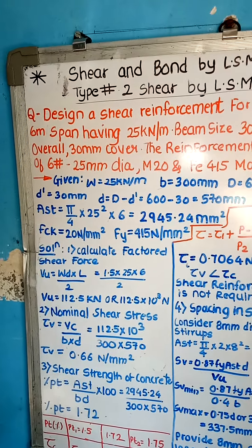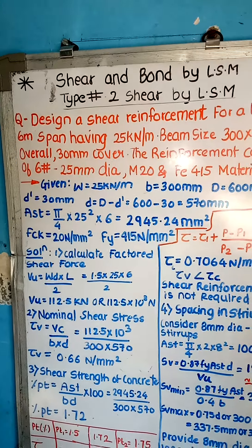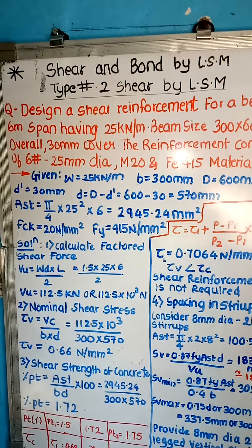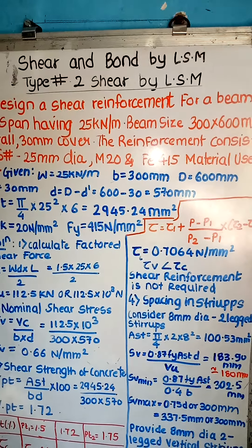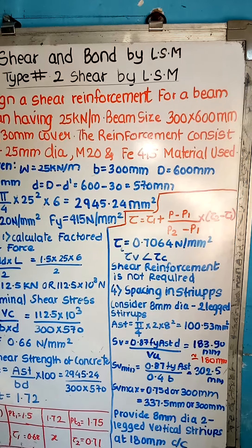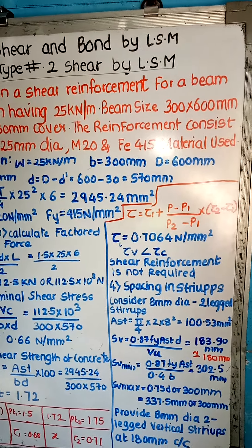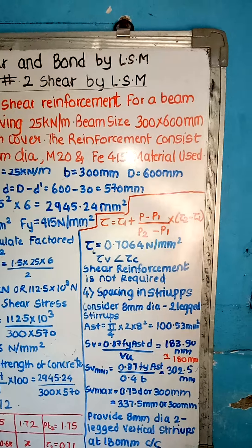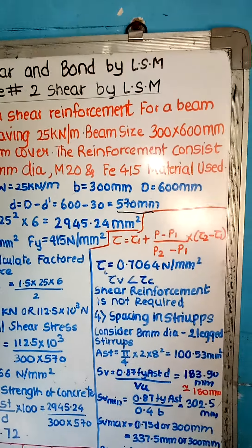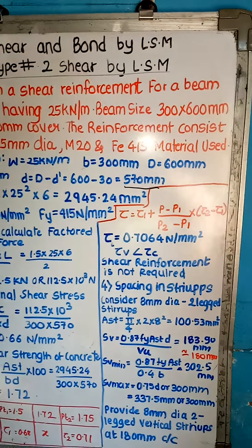Now d dash, we have mentioned the nominal cover, effective cover. We assume that effective cover d dash is 30 mm. Now small d will be capital D minus effective cover. So overall depth minus effective cover: 600 minus 30 is equal to 570 mm. Small d, this is.